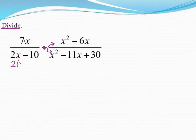Both of those terms have a 2 in common, so I'll divide out a 2, which leaves 2 and then x minus 5. I'll cross out what I just factored. In the numerator on the other side, we have x squared minus 6x.